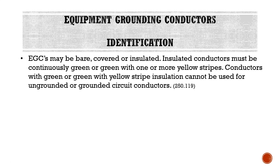Now that we know what we have to connect to and what we can use as an equipment grounding conductor, we need to know how to identify one. Equipment grounding conductors may be bare, covered, or insulated. Insulated conductors must be continuously green or green with one or more yellow stripes. Conductors with green or green with yellow stripe insulation cannot be used for ungrounded or grounded circuit conductors — green is reserved exclusively for equipment grounding conductors.